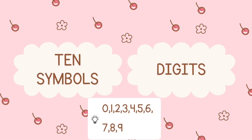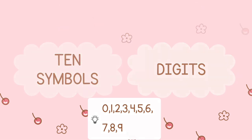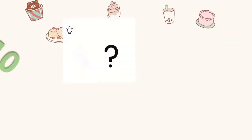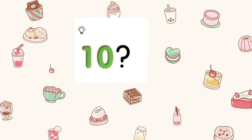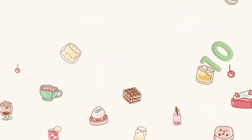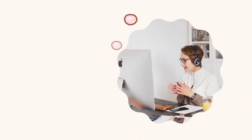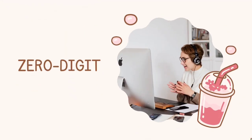The 10 symbols that we use are called digits and they look like this: 0, 1, 2, 3, 4, 5, 6, 7, 8, 9. At first glance you might think that's only 9 digits, but remember the 0 counts as one of the digits also.